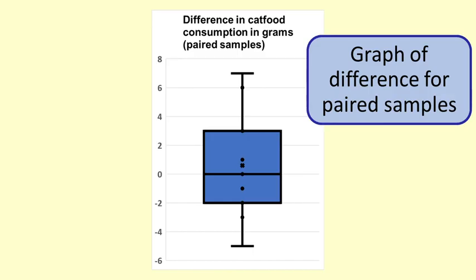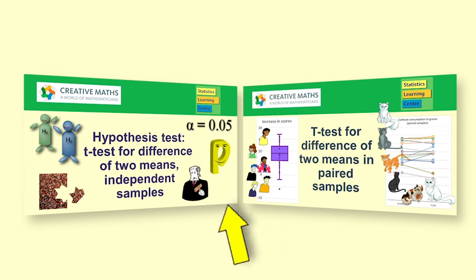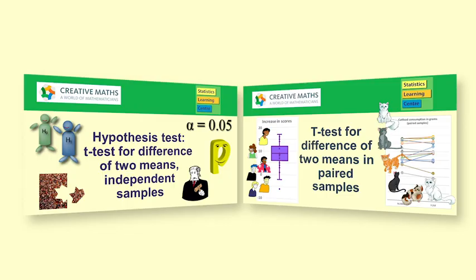When a cat eats the same amount of each variety the difference is zero, so we would look to see how close the mean difference is to zero. To determine if there is evidence of difference in the population from which the sample or samples are drawn, we will use a t-test for the difference of two means. The tests are different for paired samples and independent samples — check the description below for links to videos for each of these tests.